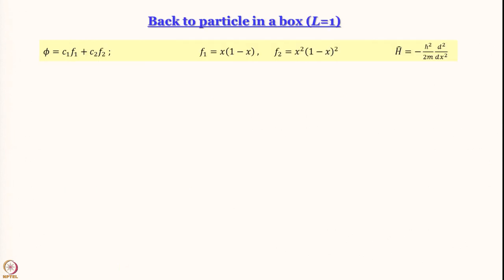With that background, let us see how we can use a linear combination of functions for particle in a box and whether that improves the situation. In a previous module we did a variational calculation of the ground state energy of particle in a box and obtained an overestimation of about 4 percent. We said 4 percent is good but not good enough.